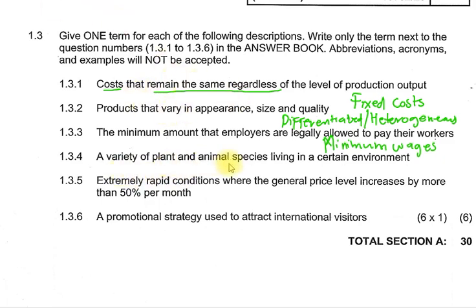Question 1.3.4: A variety of plants and animal species living in the environment. This is what we refer to as biodiversity.